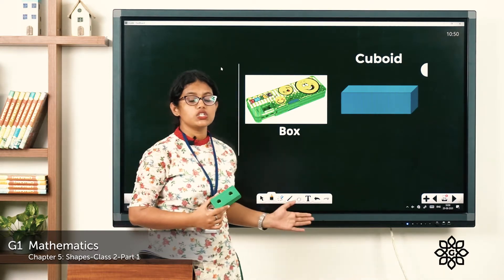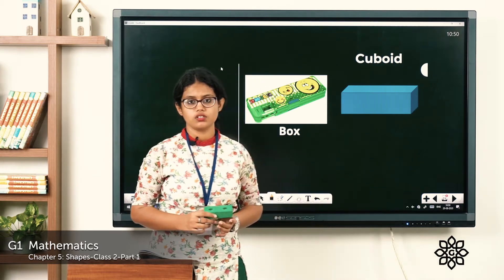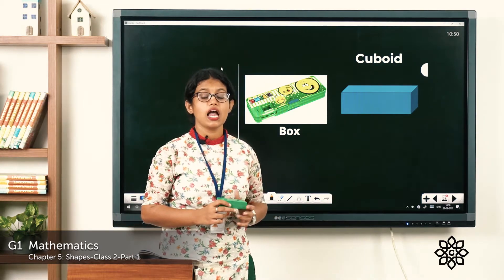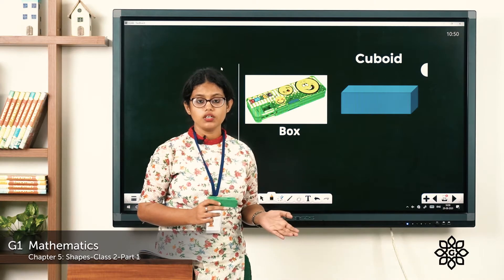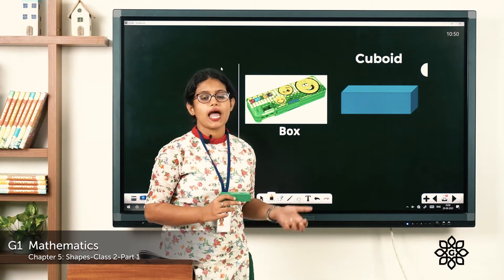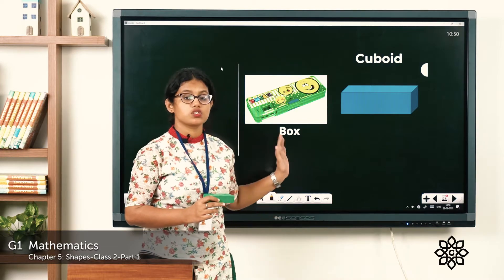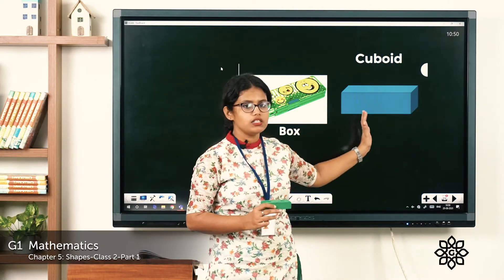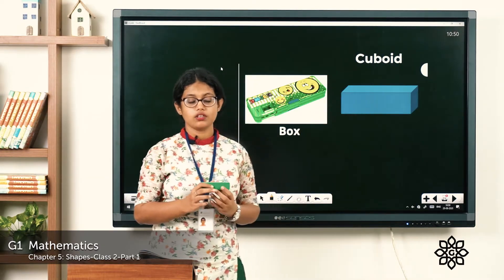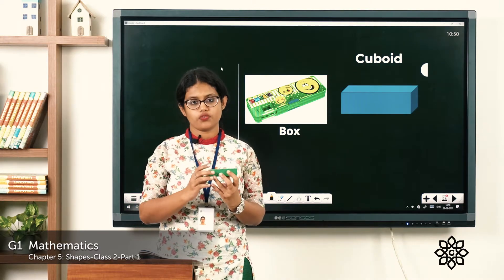The 3D shape of a rectangle is the cuboid. We learned about rectangle — it has four sides with two longer sides and two shorter sides. So the 3D shape of a rectangle is the cuboid, and the cuboid has six faces.